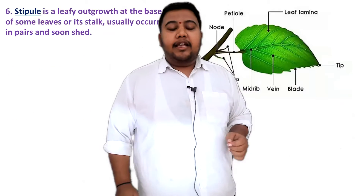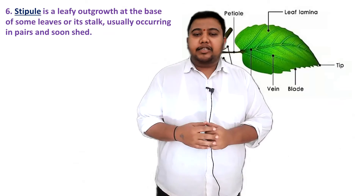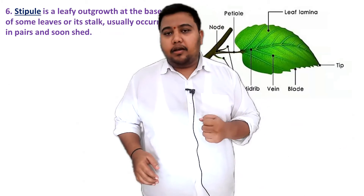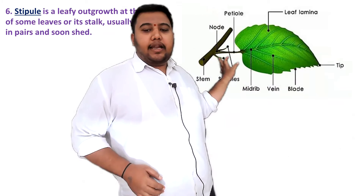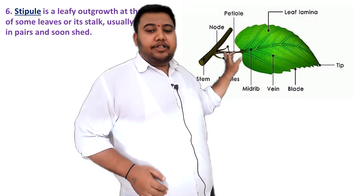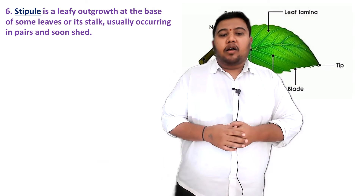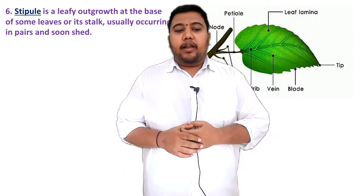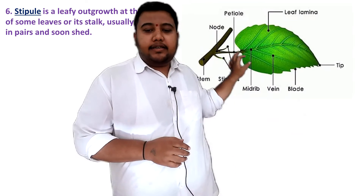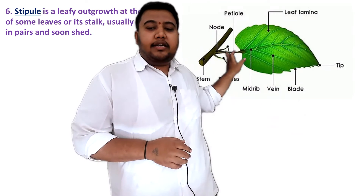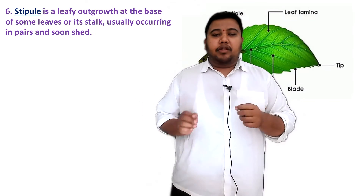The last part of the leaf is the stipule. It is not present in all plants, but in some plants there is a leafy outgrowth at the base of the leaf or its stalk for extra support — small antenna-like structures occurring in pairs. That leafy outgrowth at the base of some leaves, usually occurring in pairs, is called the stipule, which gives extra support to the leaf.